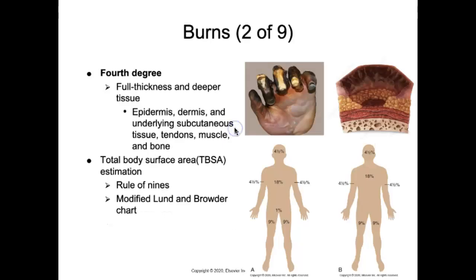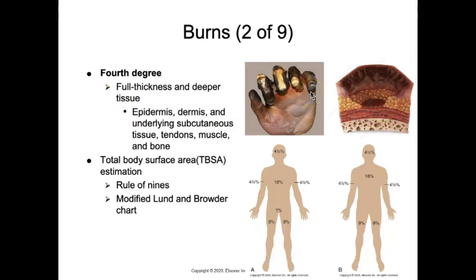A fourth degree burn is a full thickness and deeper tissue burn in which the epidermis, dermis, underlying subcutaneous tissue, and possibly tendons, muscles, and bone have been destroyed. This degree of burn definitely requires skin grafting and reconstructive surgery.